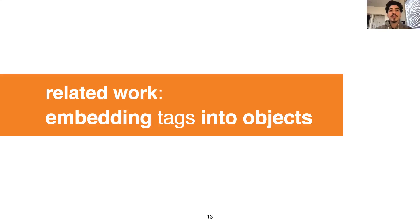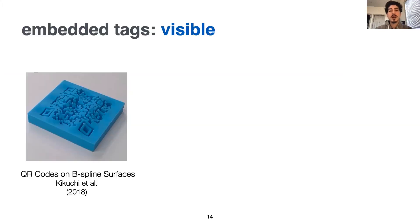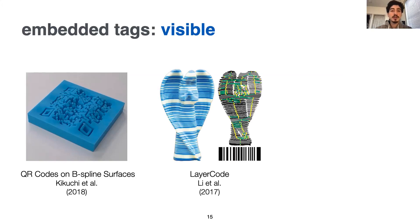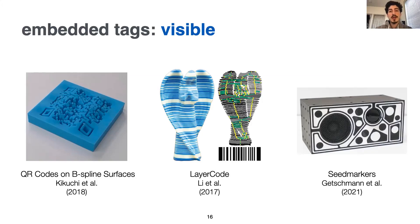So how about we instead directly embed the tags into the object geometry? Let me talk about previous research on this. Some projects suggest carving or adding visible 2D tags on the surface of the object, such as a QR code, a linear barcode, or a more customized pattern. As you can see, all of these tags are visible and they impact the look of the object.